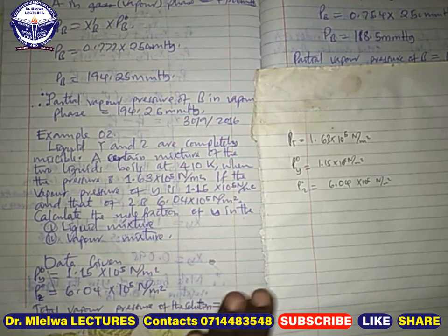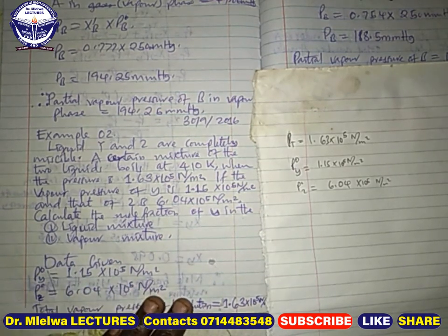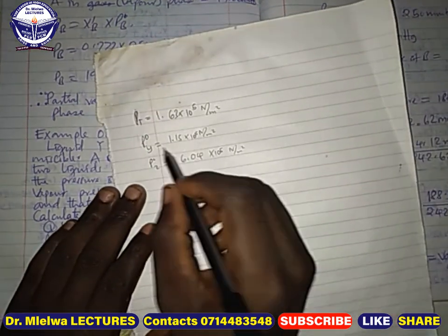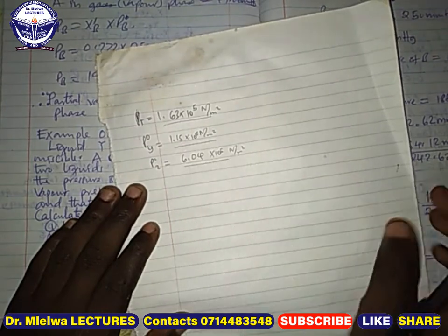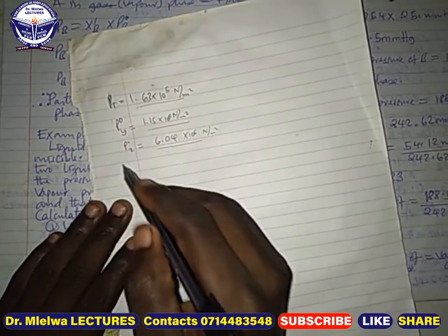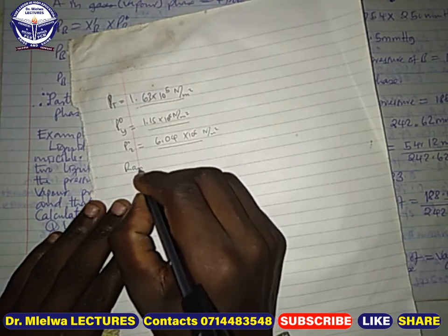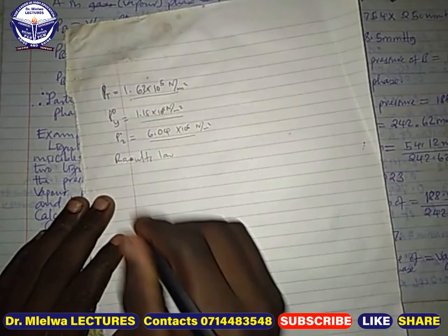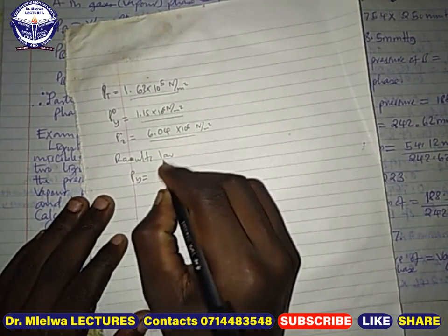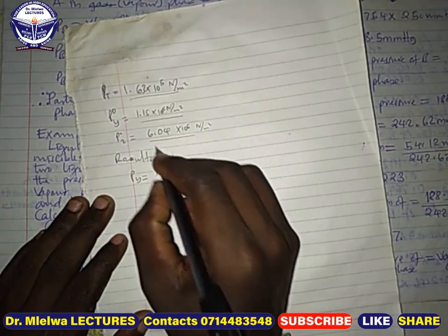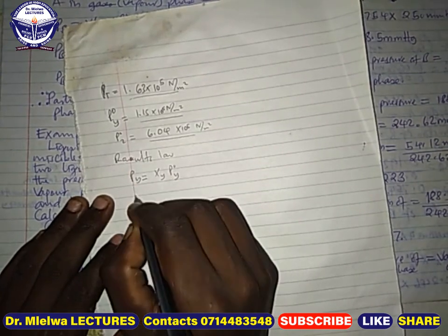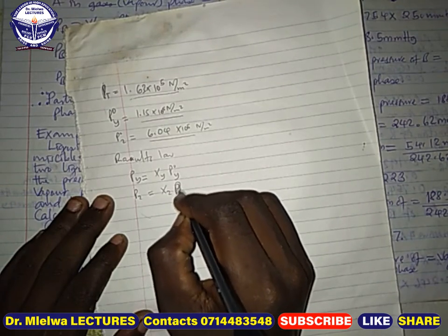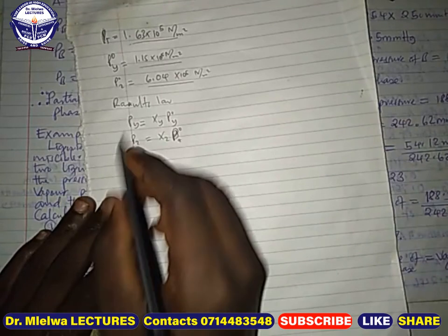The question asks us to calculate: one, the mole fraction of Y in the liquid mixture, and two, the mole fraction of Y in the vapor mixture. From Raoult's Law, the partial pressure of Y equals the mole fraction of Y times P°_Y, and the partial pressure of Z equals the mole fraction of Z times P°_Z.